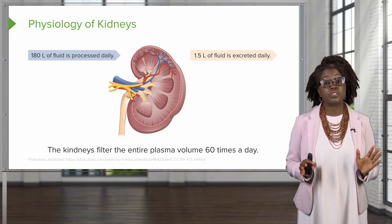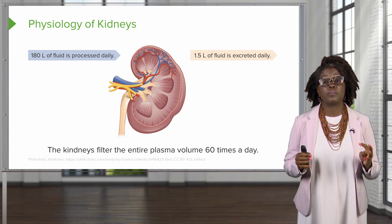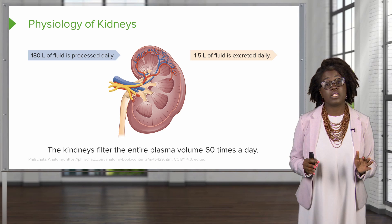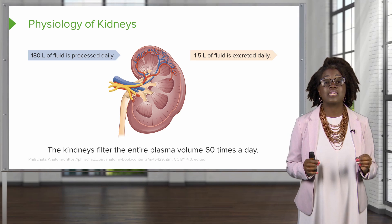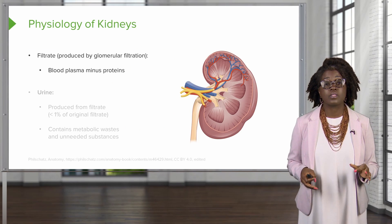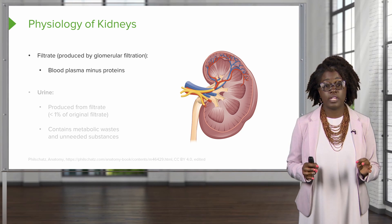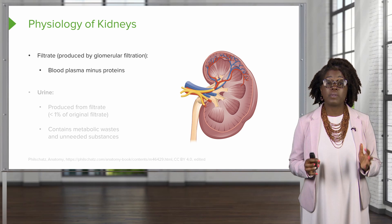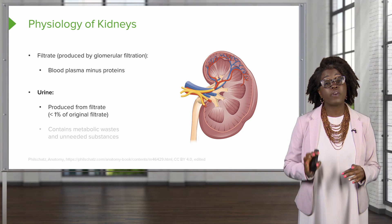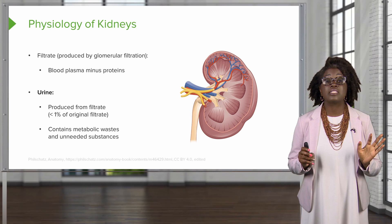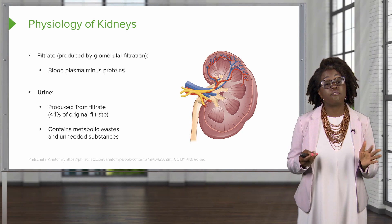While 180 liters of fluid go through the kidneys each day, the majority of it is reabsorbed and only 1.5 liters will be excreted. The kidneys filter the blood plasma about 60 times per day. The filtrate is produced by glomerular filtration — basically blood plasma minus the proteins. Urine is produced from this filtrate and contains metabolic waste and all other unneeded substances we want to remove from the body.